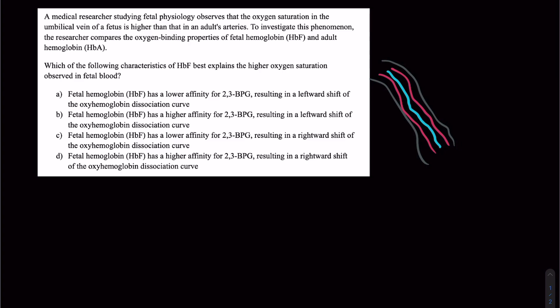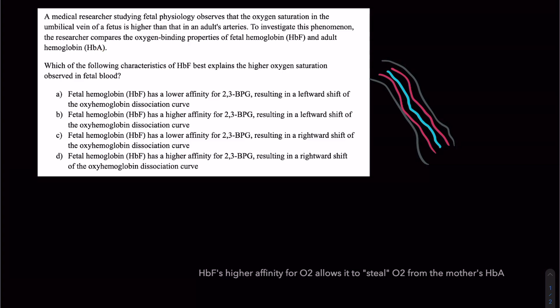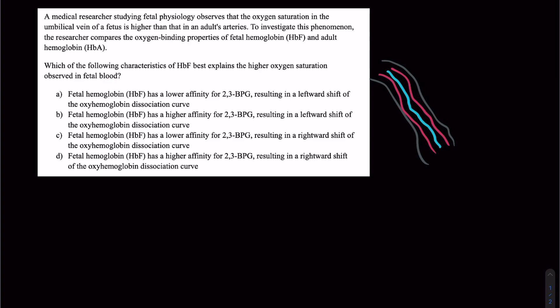Now one of the adaptations that evolution has created is fetal hemoglobin. Fetal hemoglobin actually has a higher affinity for oxygen than hemoglobin A and this question tests that concept. Which of the following characteristics of hemoglobin F best explains the higher oxygen saturation observed in fetal blood? This might seem like we're testing this niche concept of fetal hemoglobin and its affinity to 2,3-BPG which is a little bit of a slightly lower yield topic for the MCAT but really what this question is getting after is how well do you understand the oxyhemoglobin dissociation curve?